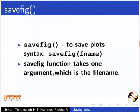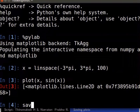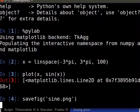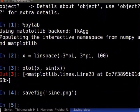Savefig function takes one argument which is the filename. Type savefig('sine.png') and press enter. This saves the file in the present working directory.